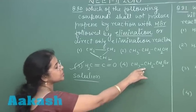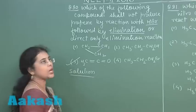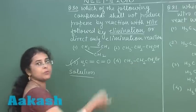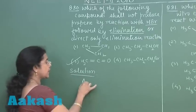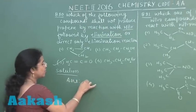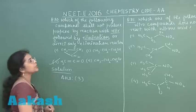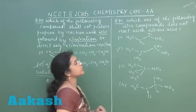The fourth one is CH3-CH2-CH2Br. This compound upon elimination will give propane. So here the correct answer is option 3. Moving to the next question, question number 81.